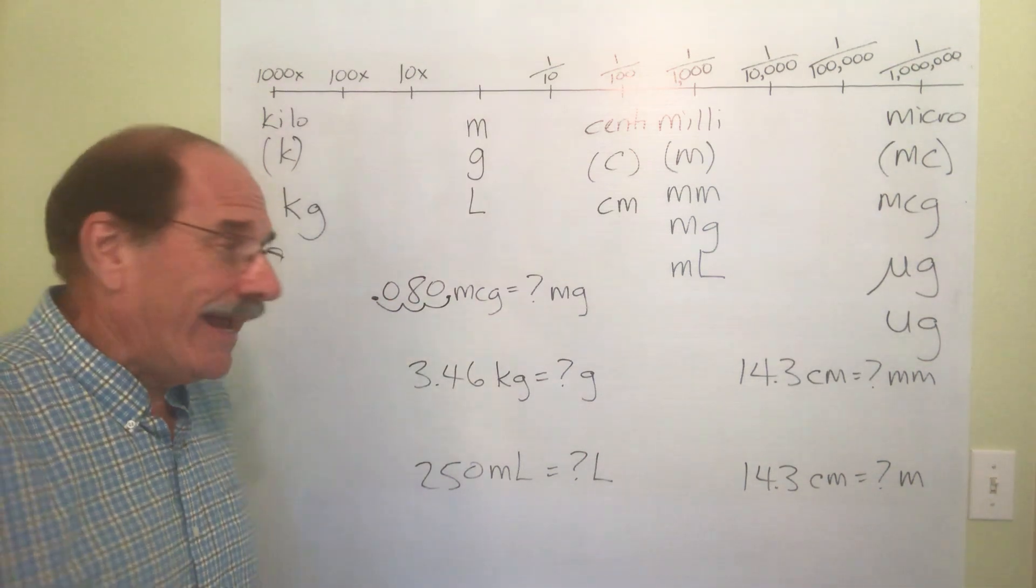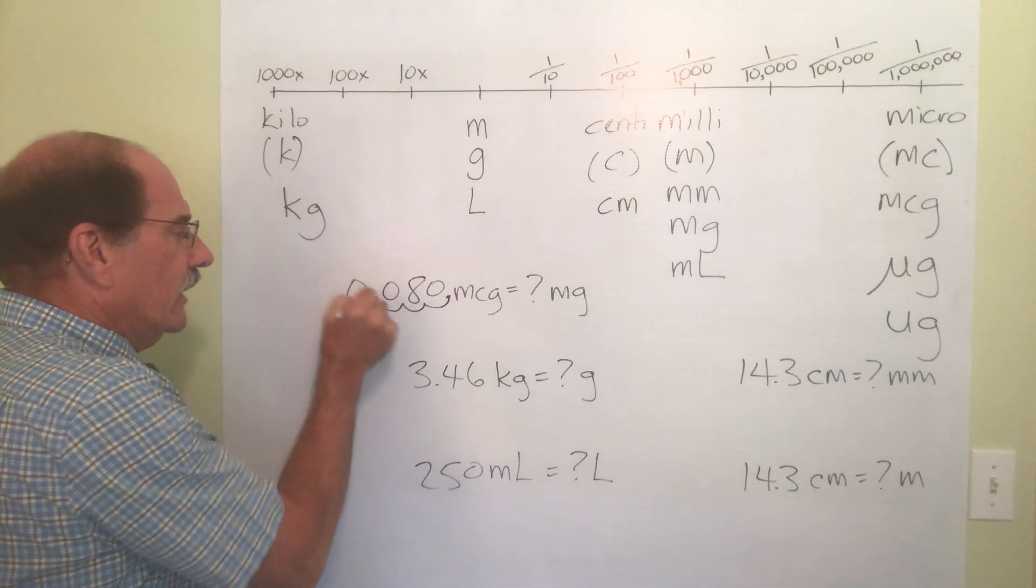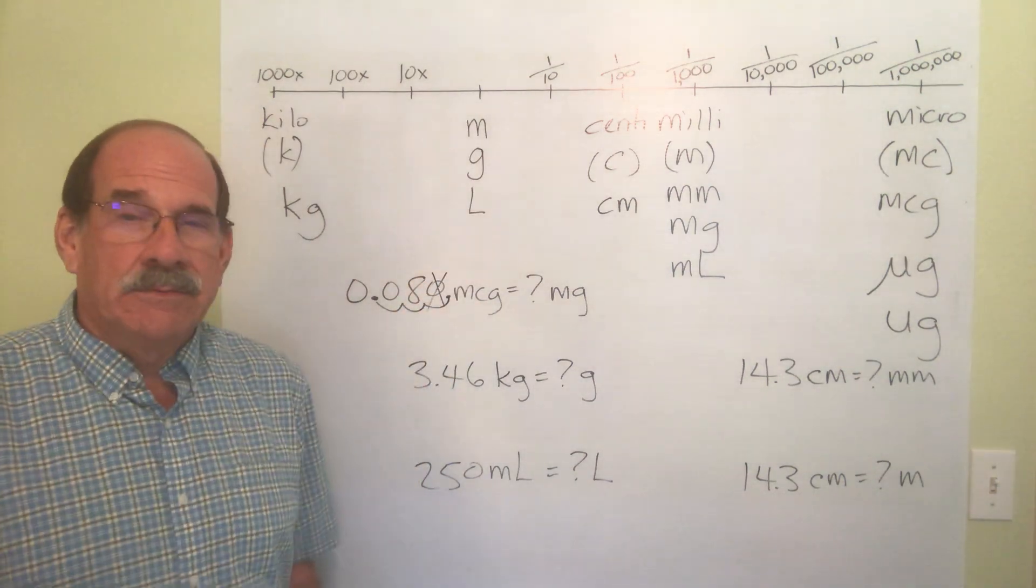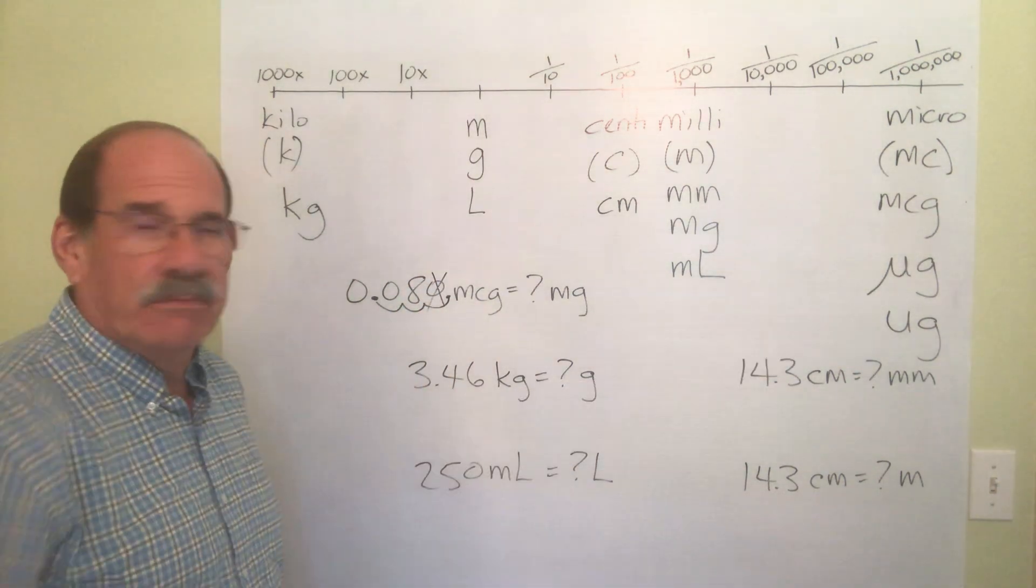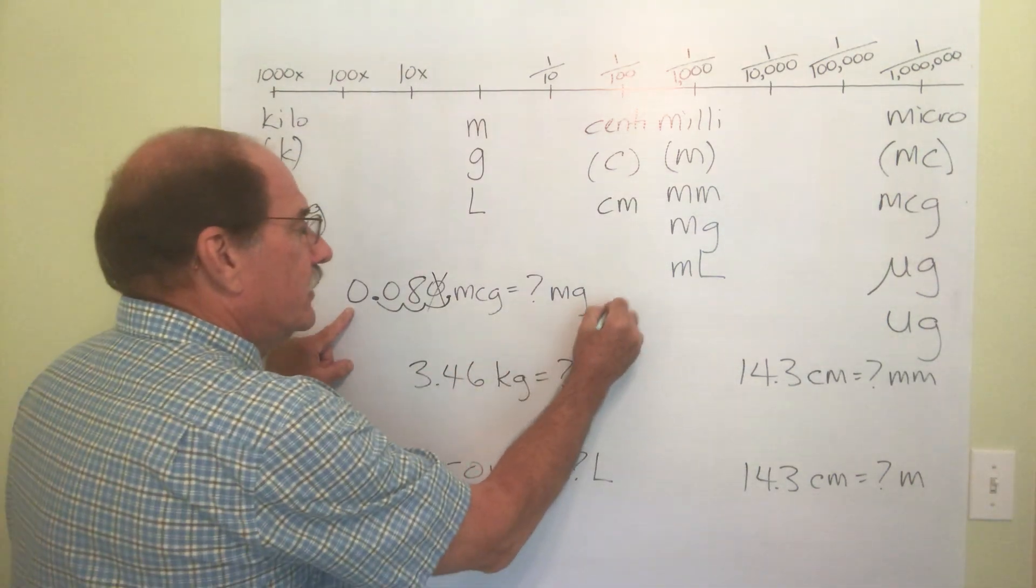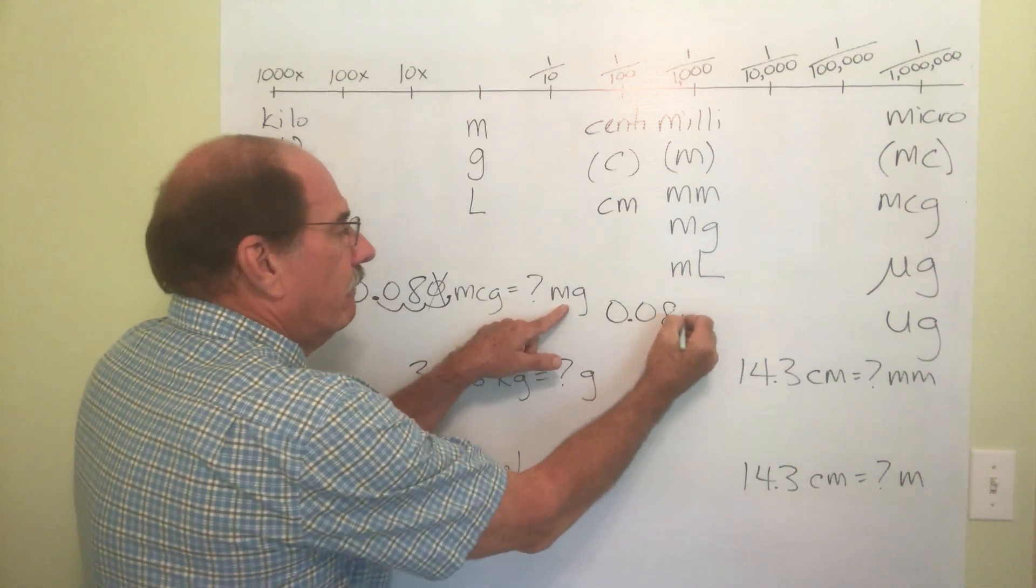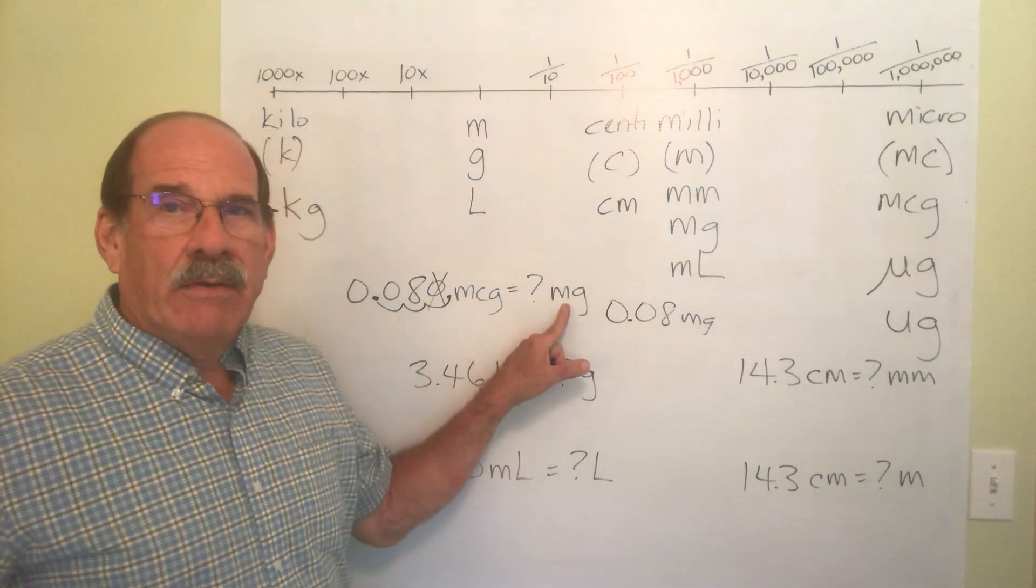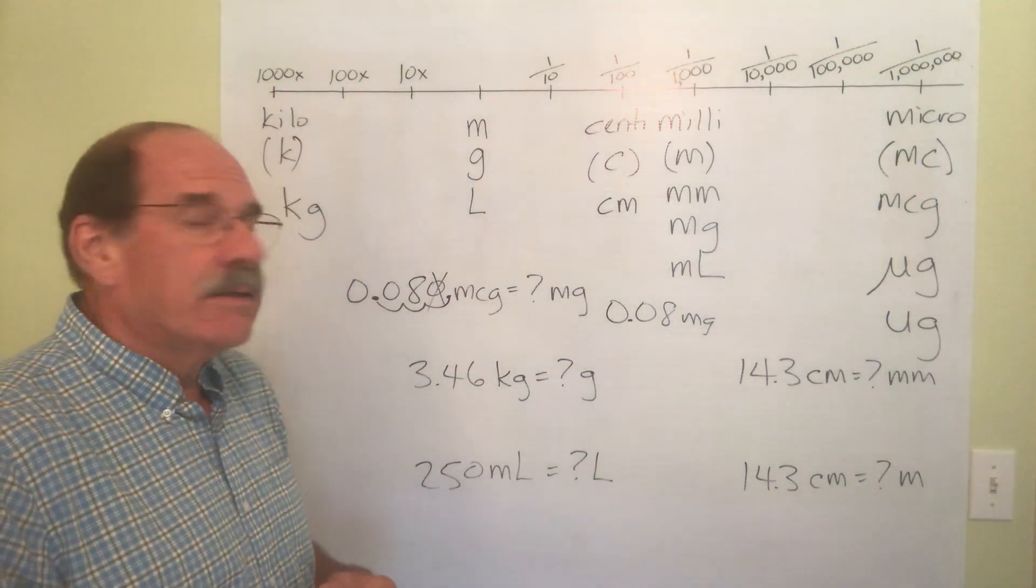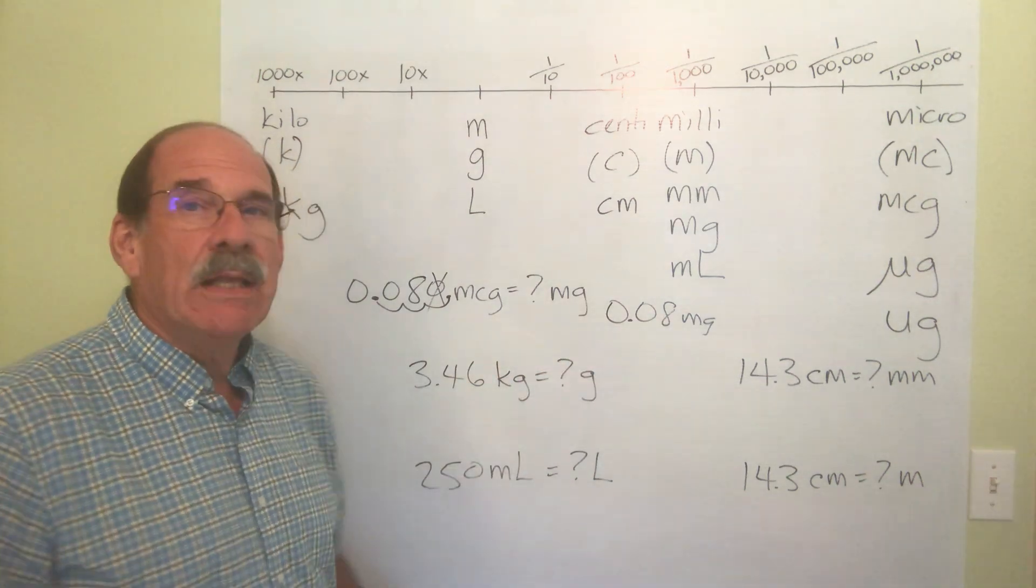Here we go again. How do I write that number? I've got to put a zero to the left of the dot because there's nothing else there, and I don't put that there. I drop those trailing zeros to the right. So how do I write that? That's 0.08 milligrams, and write the proper symbol. So 80 micrograms, the same thing as 0.08 milligrams.